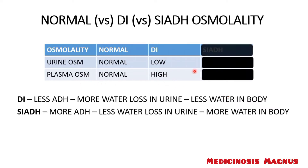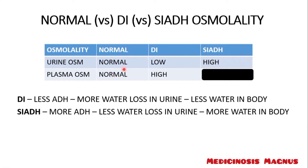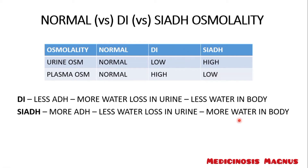In SIADH there is more antidiuretic hormone, so more antidiuresis. Only little water is lost in urine, which means there are more electrolytes in urine — giving high urine osmolality. Since less water is in the urine, more water is conserved in the body. More water means the electrolytes in the blood are less, resulting in low plasma osmolality.